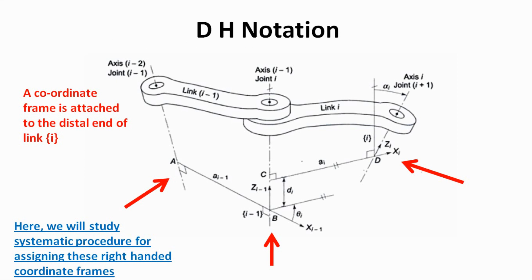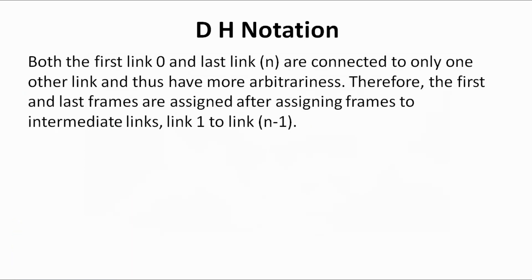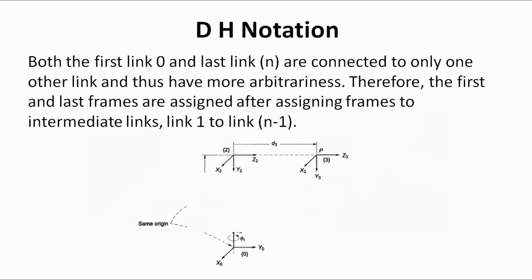We know that the first link, link 0, and the last link, link n, are connected to only one other link — link 0 is connected to link 1, and link n is connected to link n-1 only. So they have more arbitrariness. Therefore, the first and the last frames are assigned after assigning frames to intermediate links, that is link 1 through link n-1.